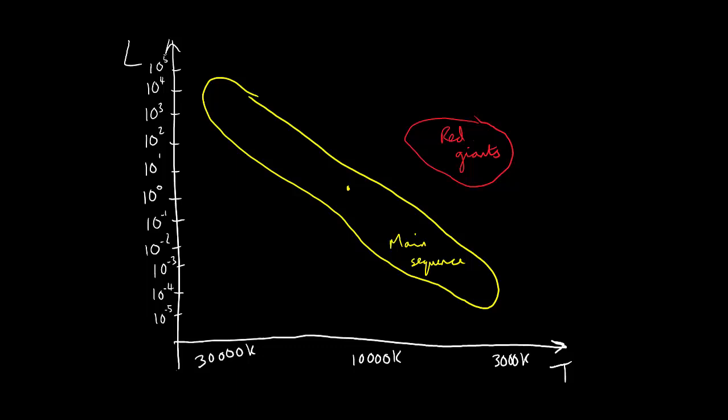Towards the right of the diagram we have the red giants. They form from low or intermediate mass stars after the hydrogen in their core has been exhausted. Although they are cooler than the main sequence stars, they have a higher luminosity than many of them because they are so much larger.